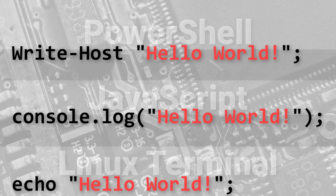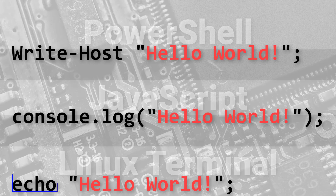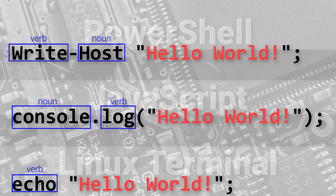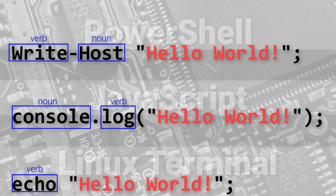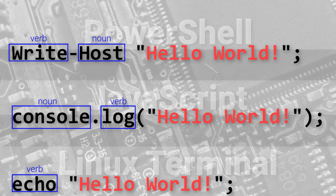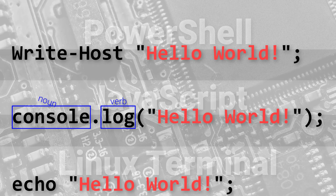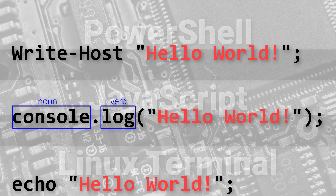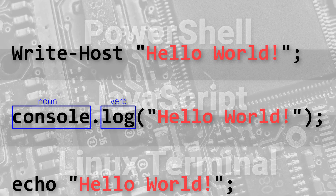Before we see this in action let me show you something important about this code. The code in each of these programs consists of either a single verb or a verb and a noun. These types of verb-noun combinations are typical with code. They allow us to read code and figure out what it does. Verbs tell us what action the code will take and nouns give us more context around that action. With console.log, the verb 'log' tells us that the action is to log a message, and the noun 'console' tells us where the message will be logged. Keep this verb-noun idea in mind — it's going to pop up a lot in programming and we'll talk about this concept more when we start to look at code more closely.